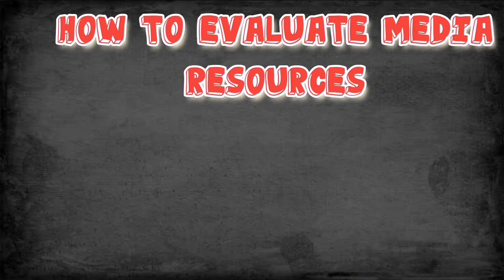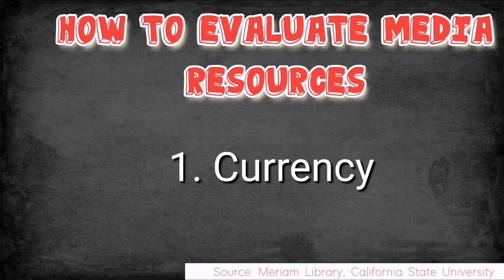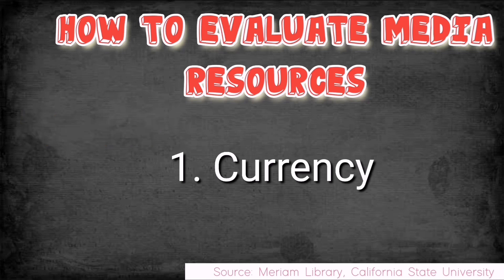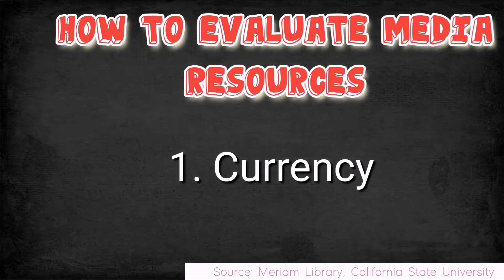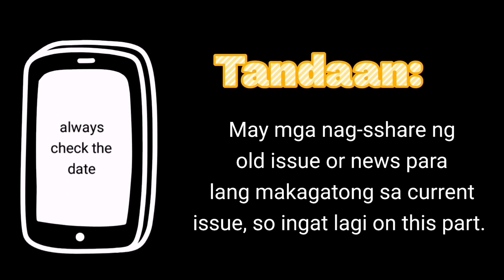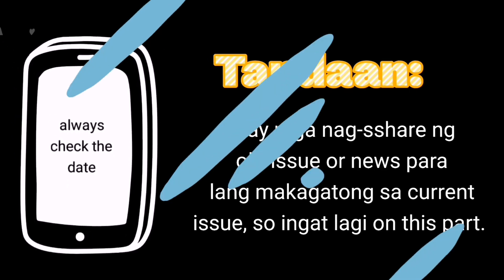This framework was adapted from Merriam Library, California State University. The first criterion is Currency — is this a recent article? Does the date affect the content or context? Some articles shared on social media can be older articles that may relate to current events but not have current or accurate information. If the article is not recent, the claims may no longer be relevant or may have been proven wrong.